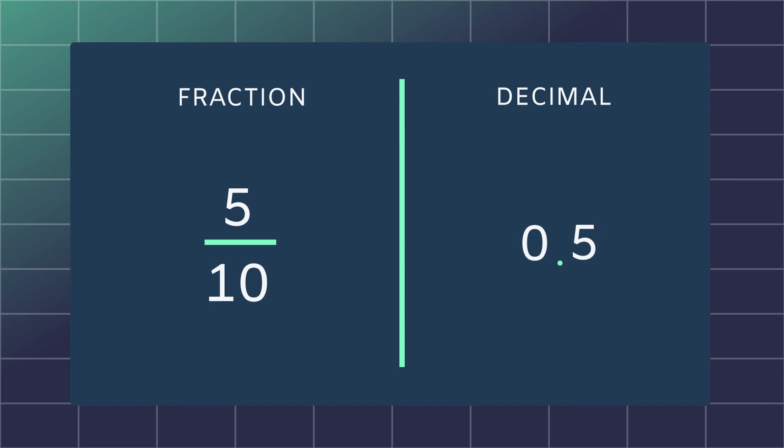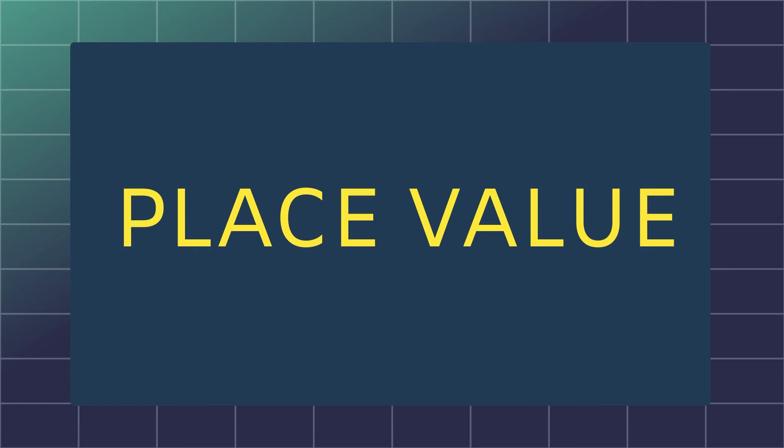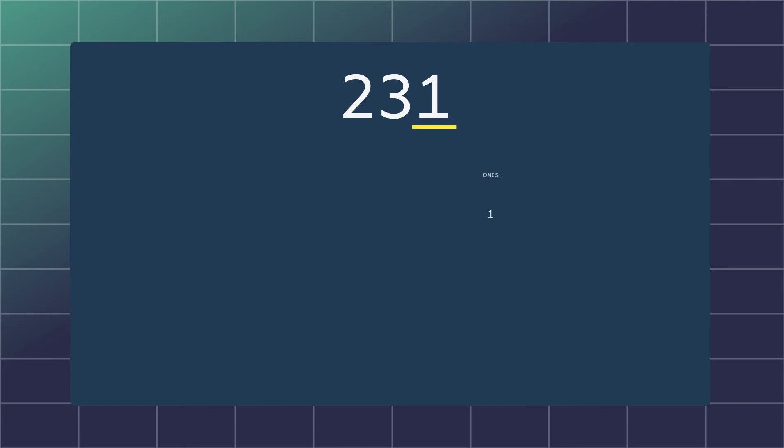To do this easily, jump back a step and think about place value. We learn that place value shows the value of a digit depending on its position in a number.